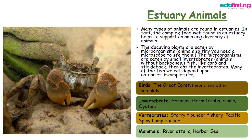Examples of estuary animals include birds such as great egrets, herons, and other shorebirds. Invertebrates include hermit crabs, clams, sea stars, and others. Vertebrates include the starry flounder, Pacific spiny lumpsucker. Mammals include river otters and harbor seals.